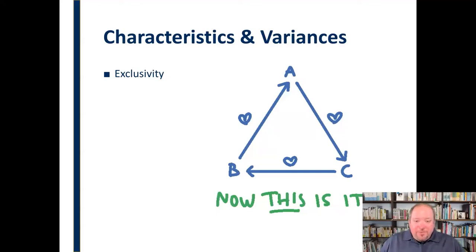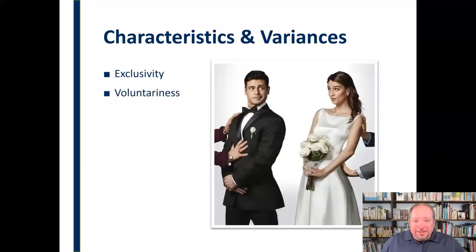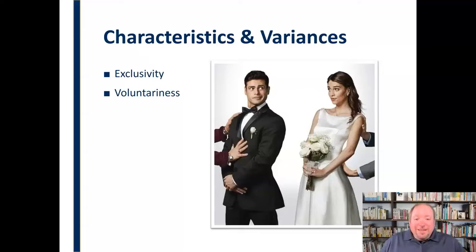Another area where we see variance in romantic relationships is voluntariness. In our modern age, we tend to think of marriage and relationships in Western cultures as a voluntary thing — we choose who we're going to be with because we fall in love. But that's a fairly new idea. The idea that you would choose to marry someone just because you fall in love with them would have been less common 100 to 150 years ago here in the United States, and still is not as common in other cultures.